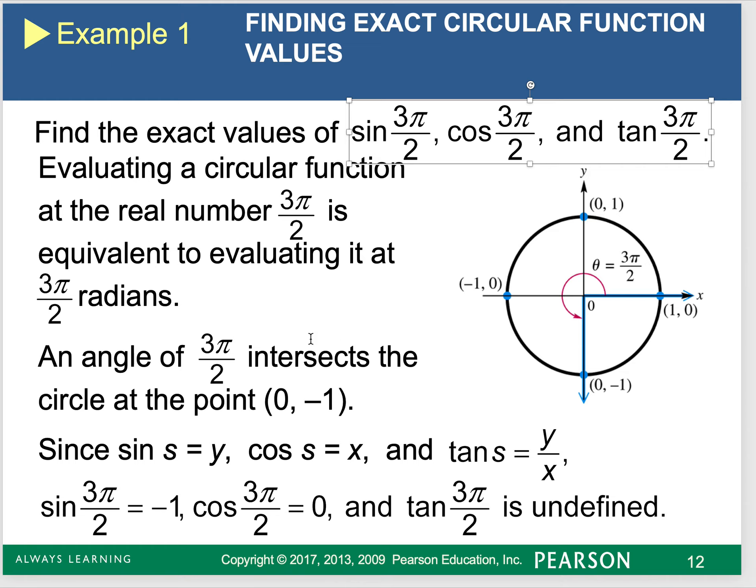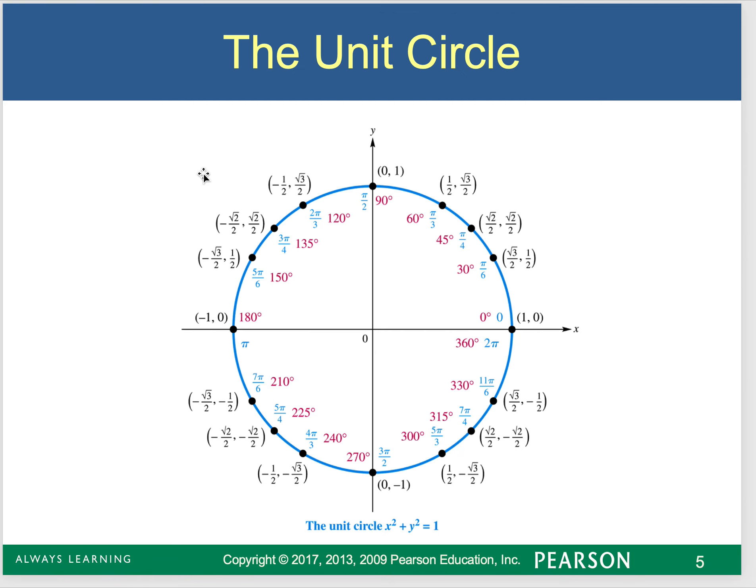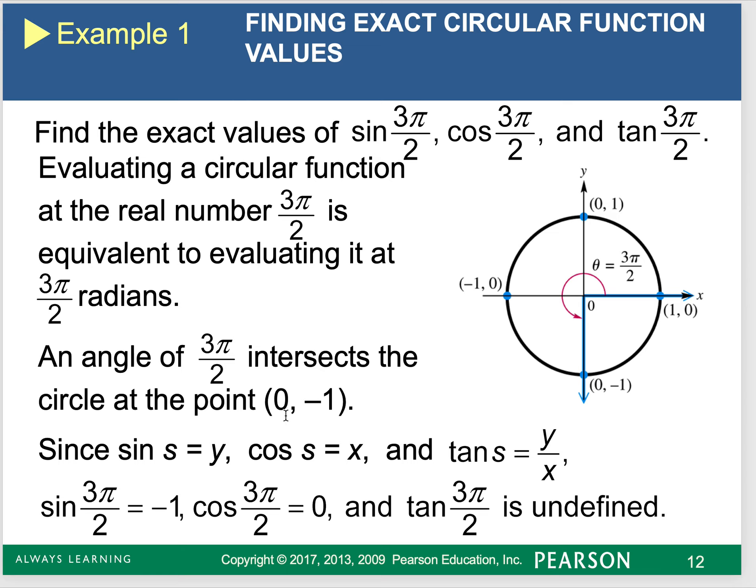We know that 3 pi over 2, according to that circle image I gave you guys, if I'm at 3 pi over 2, find the angle, and then relate it to the point that it's located at. Once I relate it to that point, it's at 0, negative 1, because it's right on the axis. Which means sine is my y value, cosine is my x value, and tangent is my y divided by my x, which in this case is undefined, because I can't divide by 0.